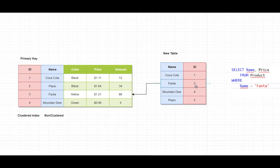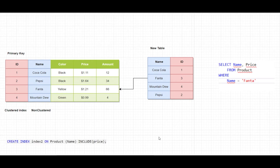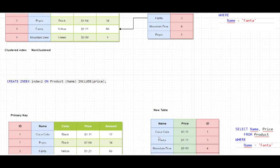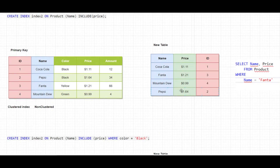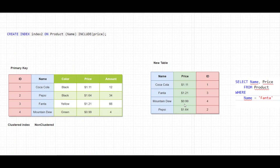In this situation, it will try to find Fanta in the index and then join by the primary key with the original table to get the price. I can improve the performance of this query if I include the price column with the index. Under the hood, the price will be attached to the index, so if I run the same query again the data will come directly from the index — there is no additional join between the index and the original table.